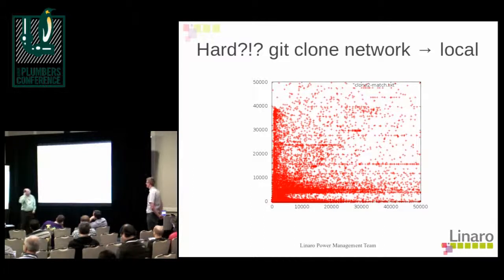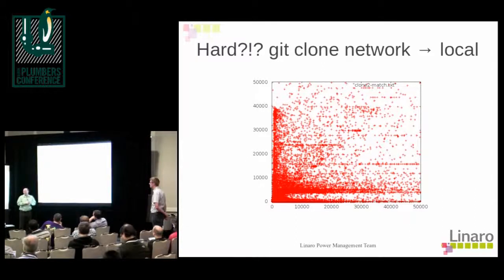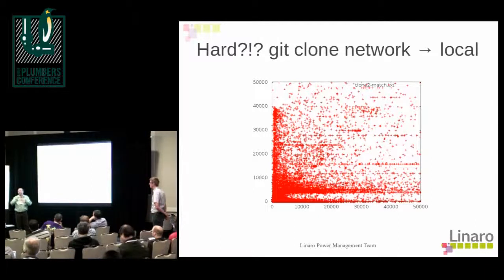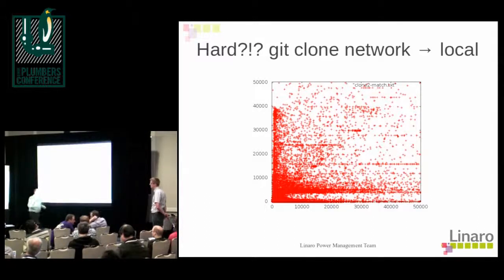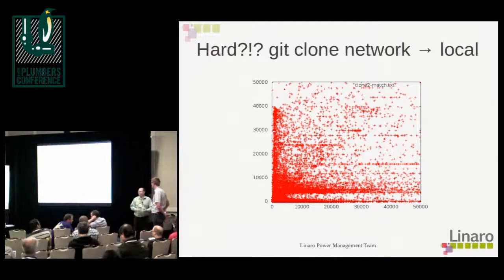For video playback, part of the issue is that it's not only one process. When you do this in an X-term, you get a network packet, then print diagnostic information which goes to your terminal process, which sends it to your X-server, and then maybe your accelerator does something, and the CPU is idle. That's part of the problem — you don't have just one process; you have a sequence of events that gets repeated.